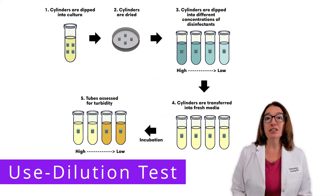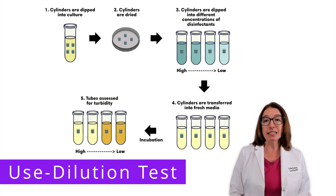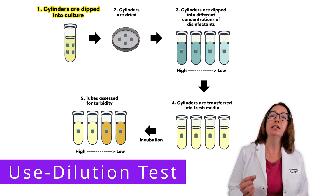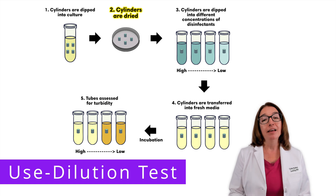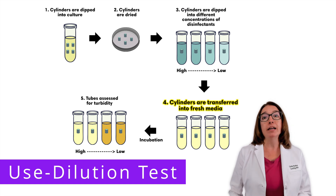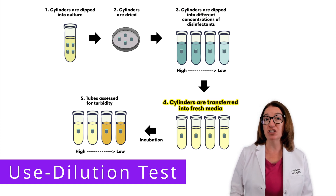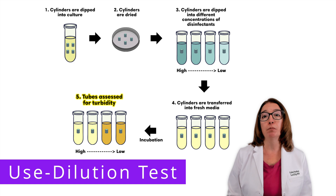The use dilution test is used to evaluate the effectiveness of a disinfectant on an inanimate surface. During this test, stainless steel cylinders are dipped into a culture containing the microorganism and then allowed to dry. Then each cylinder is dipped into decreasing concentrations of the disinfectant and transferred to a new test tube containing fresh sterile media. The test tubes are then incubated and assessed for the presence of turbidity, which indicates bacterial growth is present.